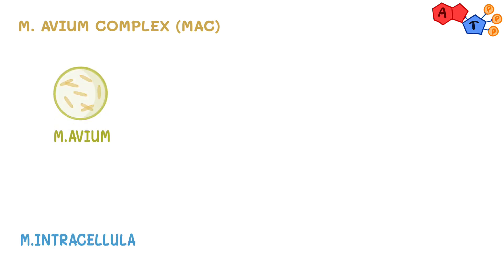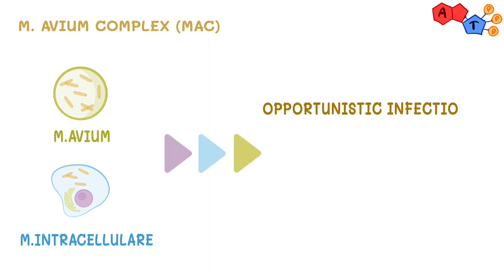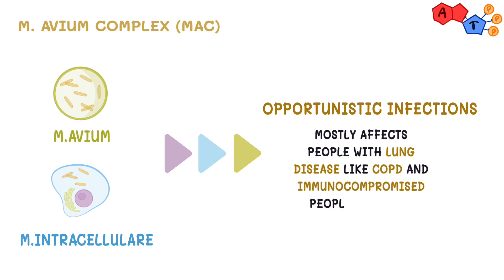Mycobacterium avium complex, also known as MAC, refers to two types of bacteria: Mycobacterium avium and Mycobacterium intracellulare. They are known for causing opportunistic infections. MAC rarely infects healthy individuals and mostly affects people with lung disease like COPD — chronic obstructive pulmonary disease — and people who are immunocompromised, such as in cases of HIV.